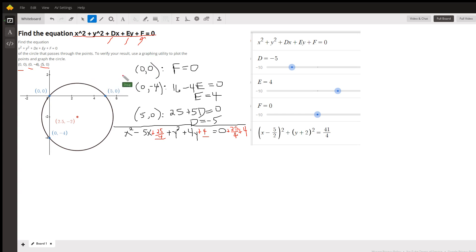And if the circle passes through 0, 0, that means when X is 0 and Y is 0, you get a true statement. So put 0 in for X, 0 in for Y, all these terms disappear, and you get F equals 0.